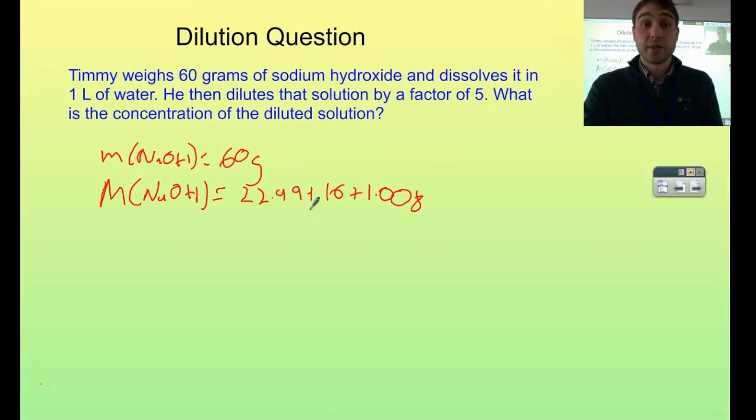Molar mass of sodium hydroxide is 22.99 plus 16 plus 1.008, from the periodic table. To figure out my number of moles of sodium hydroxide, it's mass over molar mass. So 60 divided by 22.99 plus 16 plus 1.008. I'll go to my calculator and figure that out.